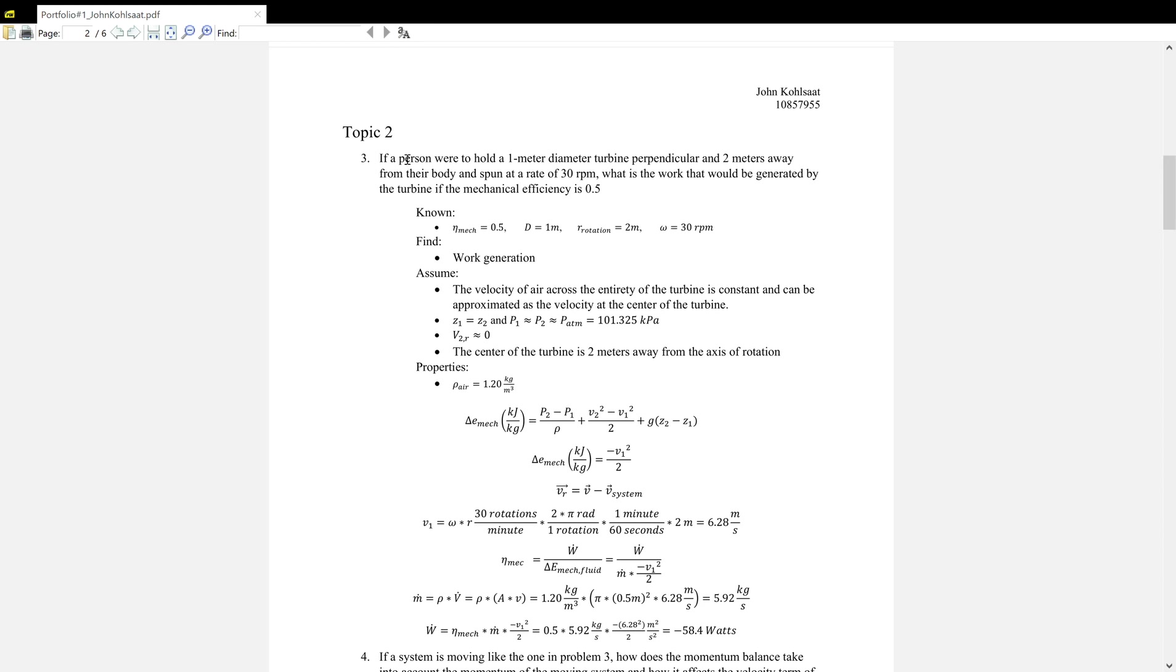For topic number two, the first question is actually a calculation question. If a person were to hold a one meter diameter turbine perpendicular, two meters away from the body, and spin it over to 30 RPM, what is the work that would be generated by the turbine if the mechanical efficiency is 0.5? We know mechanical efficiency, the diameter of the turbine, the radius of rotation, and the speed at which it's rotating. We're told to find work generation. We can assume the velocity across the entirety of the turbine is constant and can be approximated as the velocity at the center of the turbine.